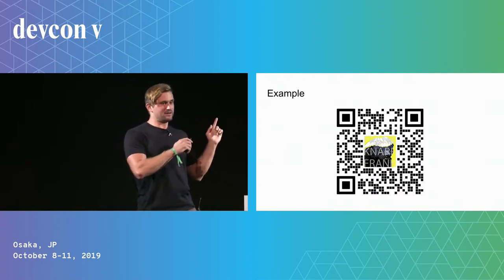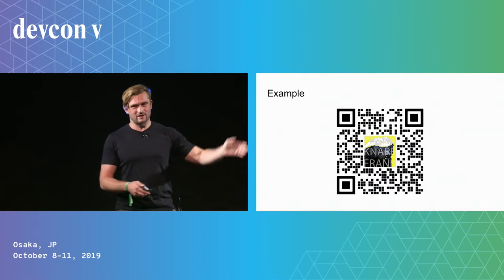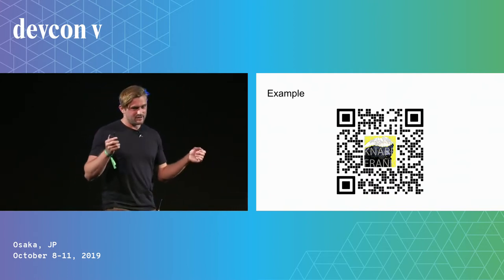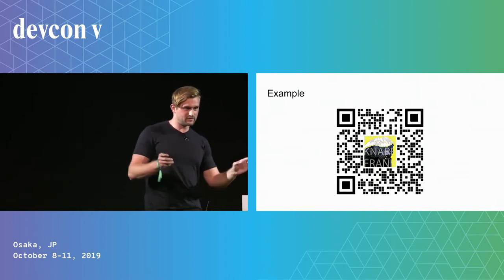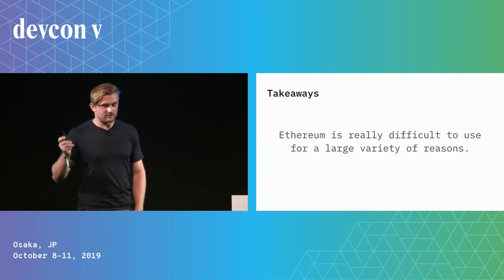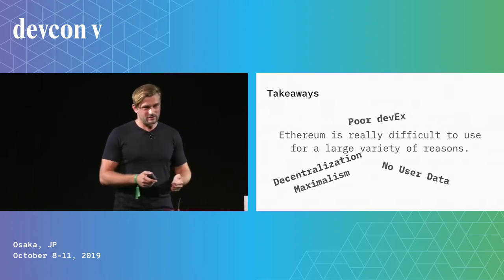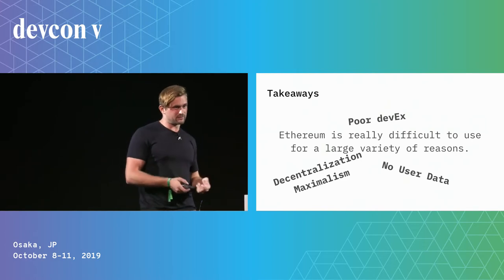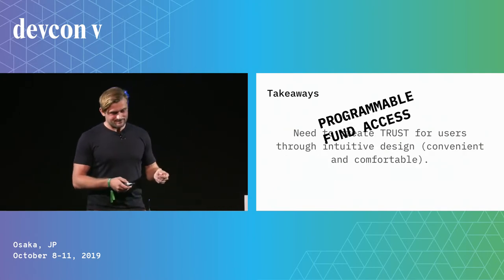If you want to see another example, scan the QR code — this is a native mobile Ethereum app with an account contract and an off-chain solution integrated, used for social tipping of content. The takeaways: Ethereum is really difficult to use for many reasons. While decentralization is really important, it also inhibits user adoption if taken to the nth degree from the beginning. There are also underdeveloped tools in the ecosystem and no user data to say what tools are really useful.